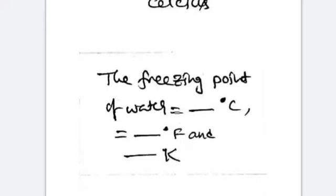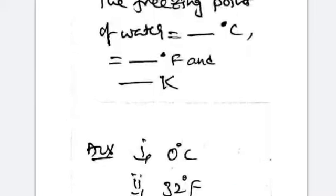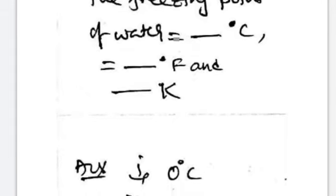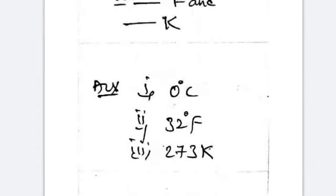The freezing point of water is equal to: 0 degrees centigrade, 32 degrees Fahrenheit, and 273 Kelvins. So the freezing point of water is 0°C, 32°F, and 273 K.